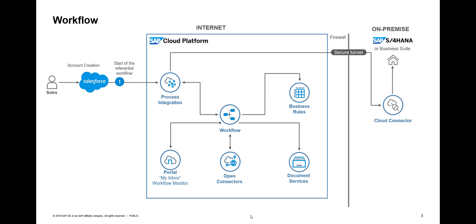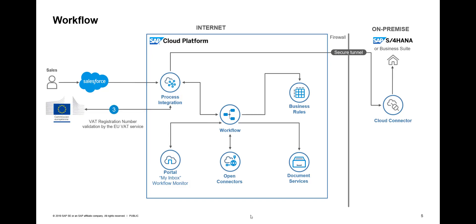First, we're going to verify that everything is okay for this account creation — if all the information was inserted by the sales rep. If there is missing information, we will send an email telling him what's missing. Once he re-enters it and everything is okay, we will verify the VAT registration number with the European Commission VAT web services using SOAP calls, which gives us back the correct name of the account.